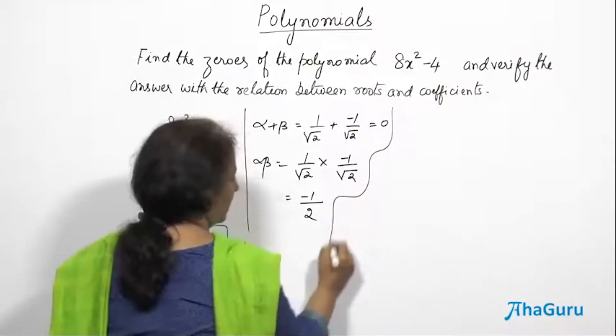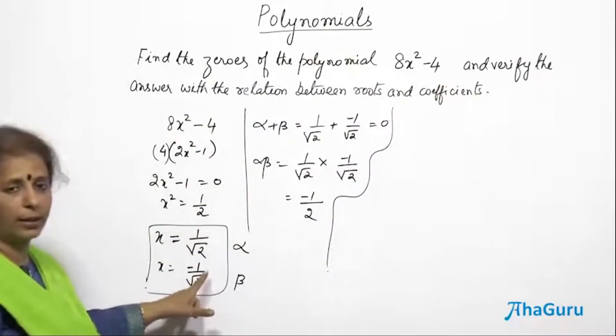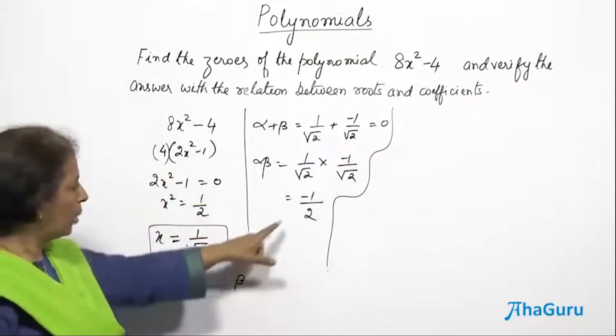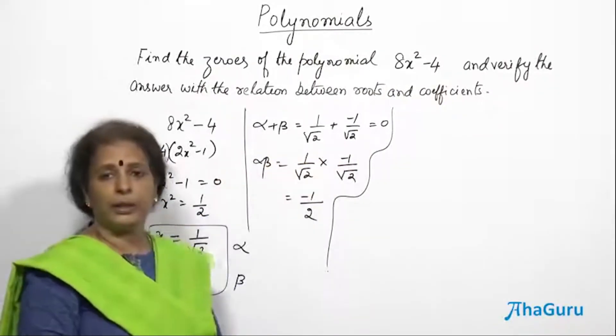Am I correct? In the sense that if my alpha beta values are correct, then only these answers are correct. But I don't even know whether this is correct or not. So if these two are correct, obviously this will become correct. How do I check alpha beta = -1/2? How do I check alpha + beta = 0?